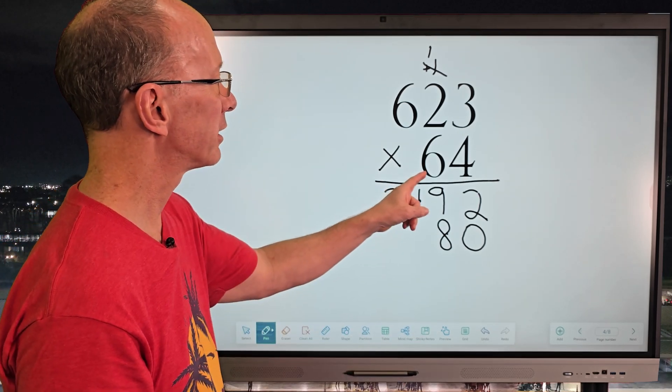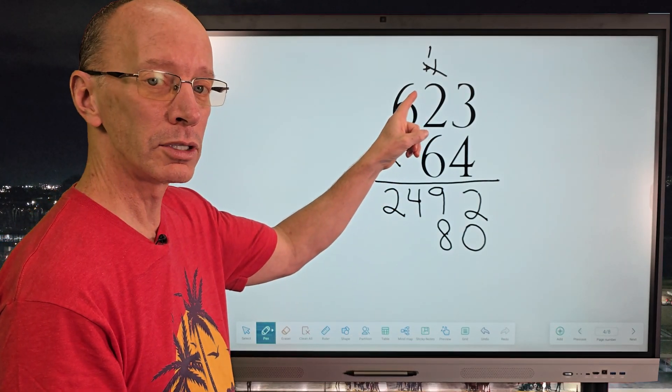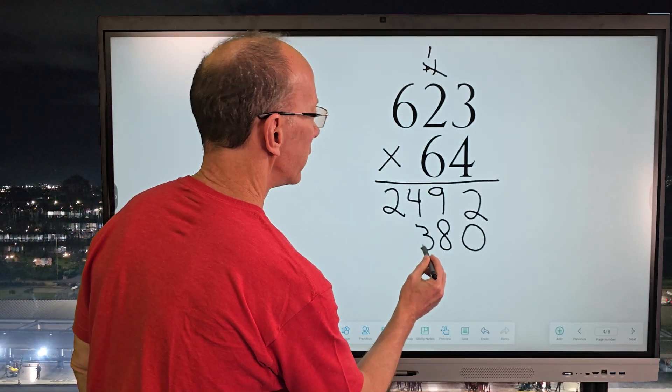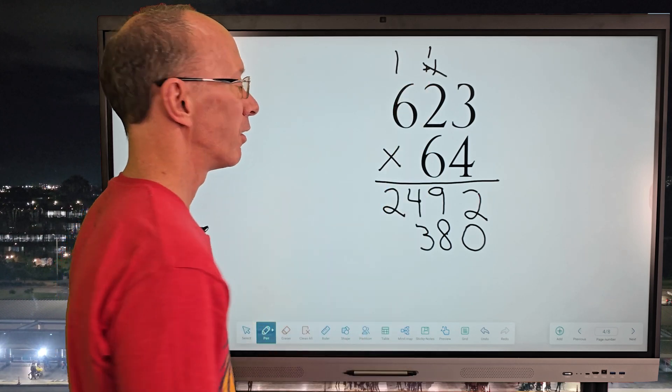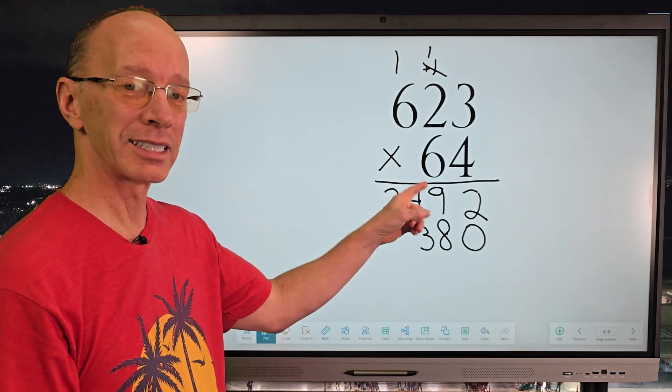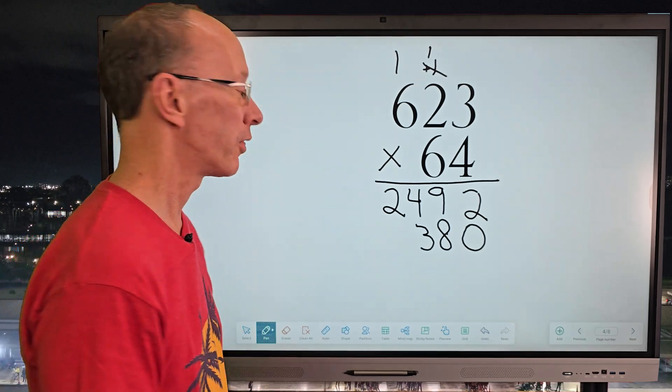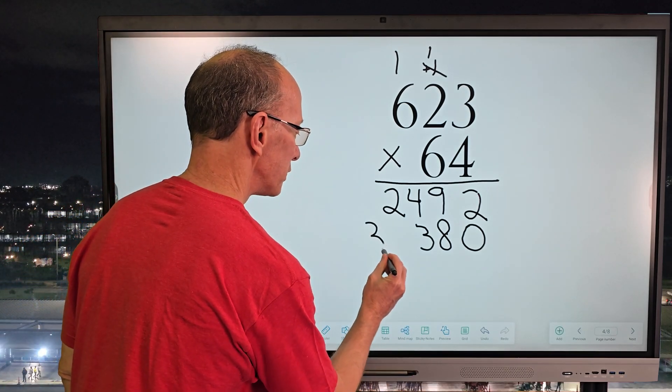And now I'm going to take 6 times 2 is 12 plus the 1, which would be 13. So I put 13 right here, carry the 1. And now I'm going to go ahead and multiply 6 times 6 equals 36 plus the 1 would be 37. So I'll put 37 here.